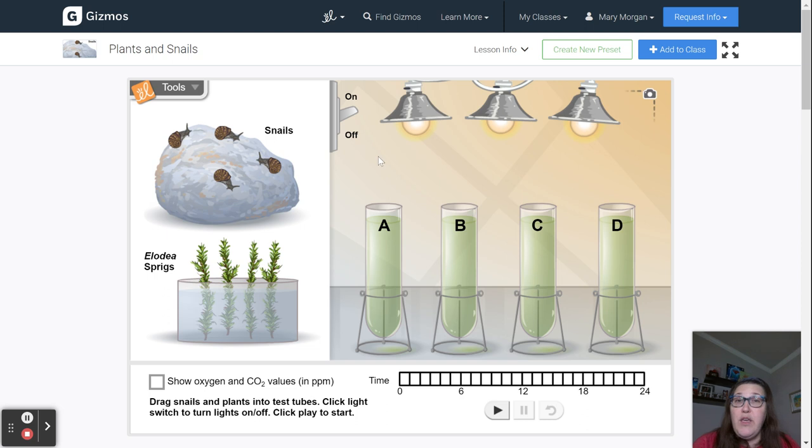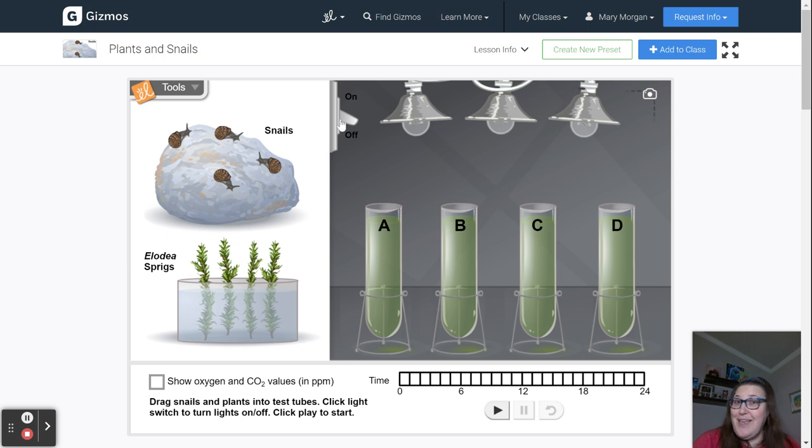The first variable that you can adjust is light. You can choose to run your experiments in the light by clicking the switch to on, or you can click the switch in the top center of the screen to off and run your experiments in the dark.